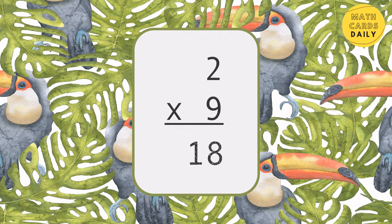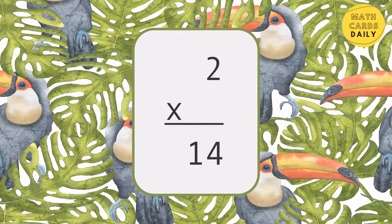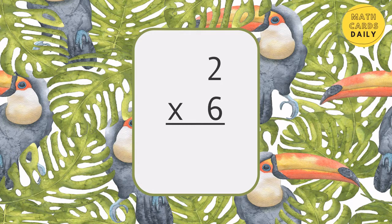2 x 9 is equal to 18. 2 x 5 is equal to 10. 2 x 7 is equal to 14. 2 x 6 is equal to 12.